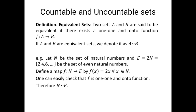Next we will prove that f is an onto function. For every element of the codomain — here our codomain is E and its elements are of the type 2x — for every element 2x belonging to E there exists an element x in N such that f(x) = 2x. So f is an onto function. Since f is both one-to-one and onto, we can say N is equivalent to E; that is, N and E are equivalent sets.